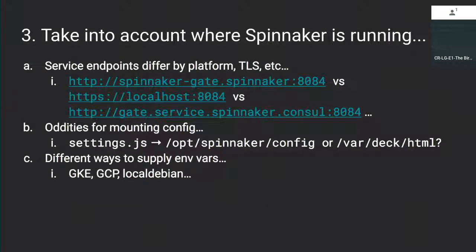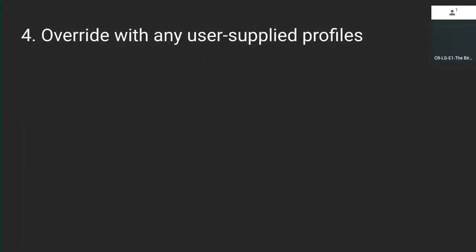Halyard also takes into account environment-specific details — if you're running on Kubernetes your endpoints look one way, if you've configured TLS on localhost that looks different, or if you're running in a distributed environment the endpoints are different. It plugs all that in for you. There are also oddities for how configuration is mounted across platforms — deploying deck on Kubernetes versus a local machine — and different ways to supply environment variables. Additionally, if you have any prior Spinnaker configuration that's handcrafted or isn't supported inside Halyard, you can supply that directly to Halyard and it uses that in place of what it generates for that service.